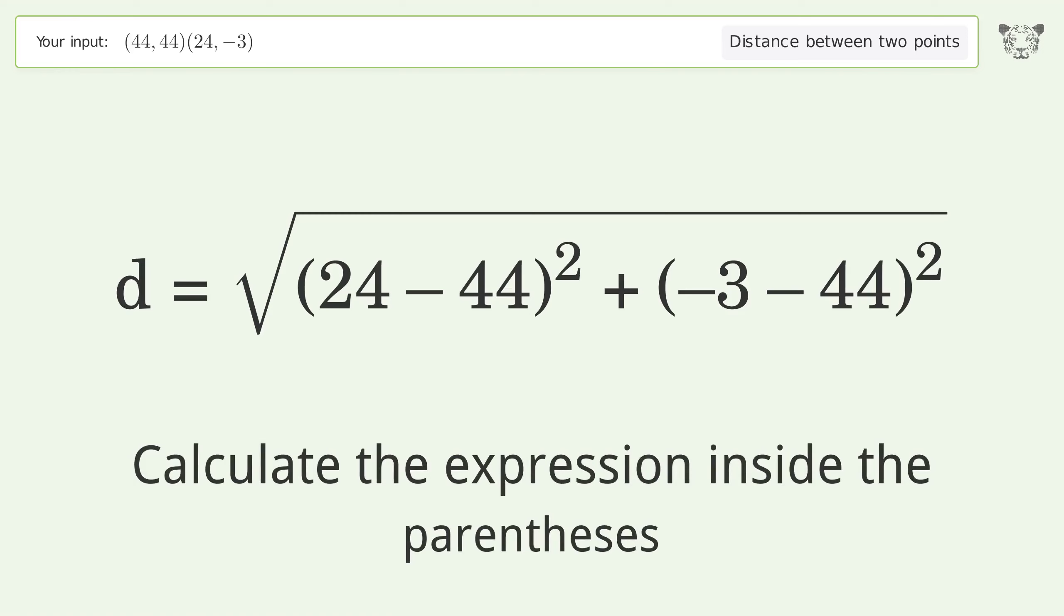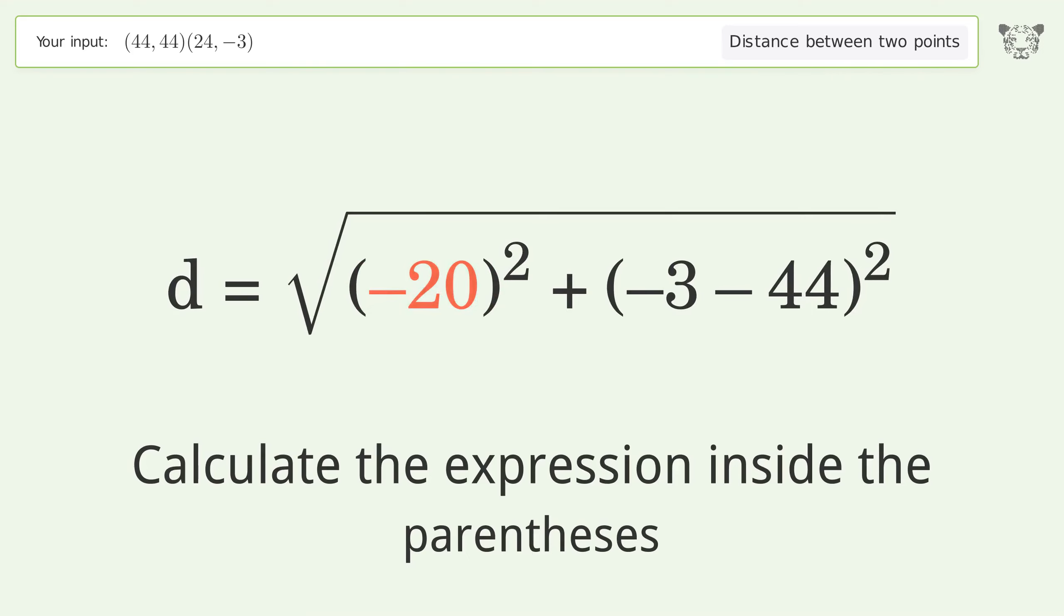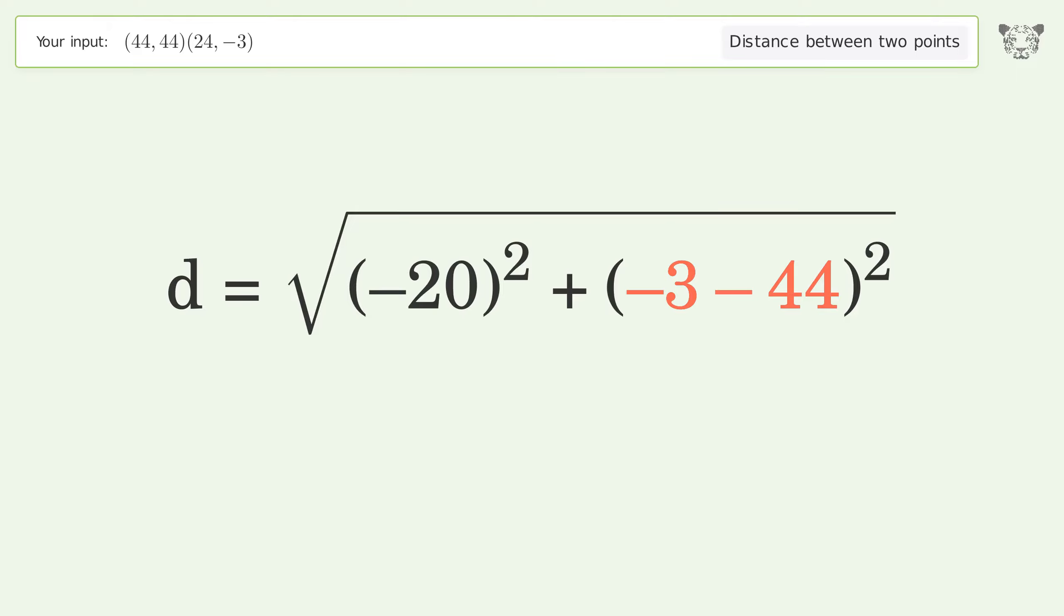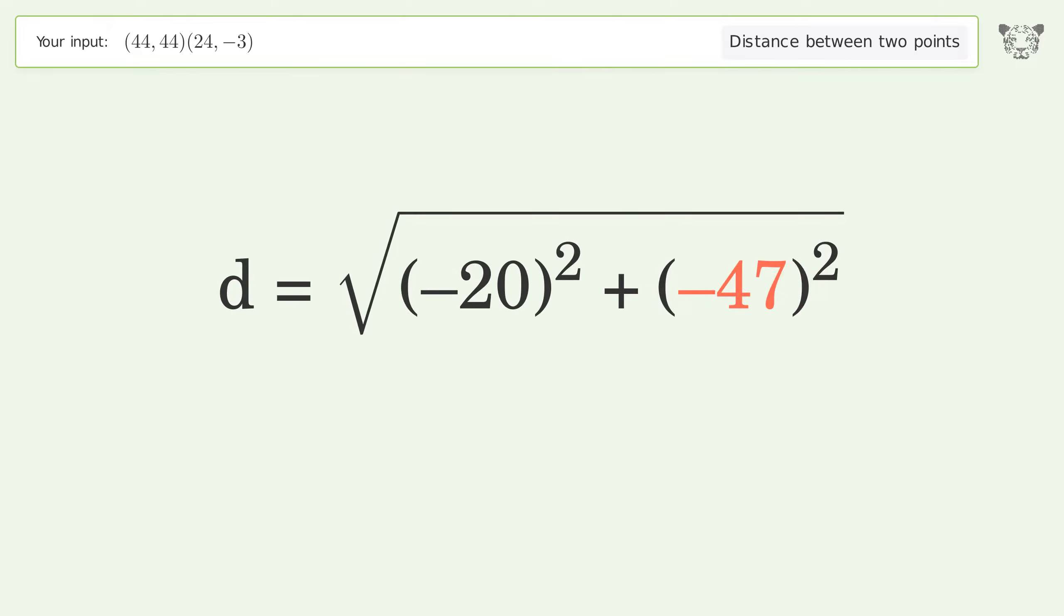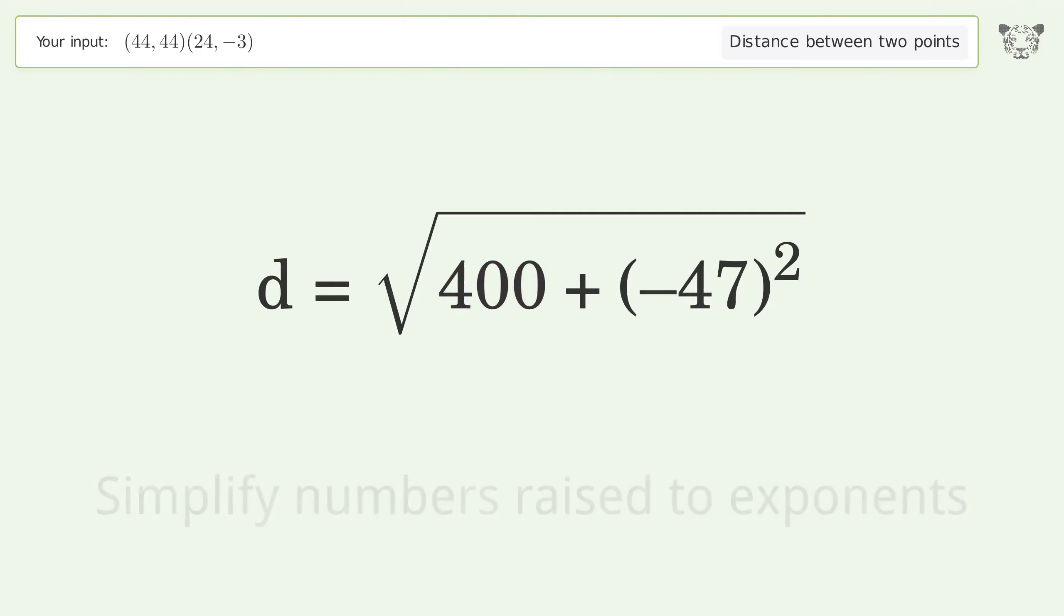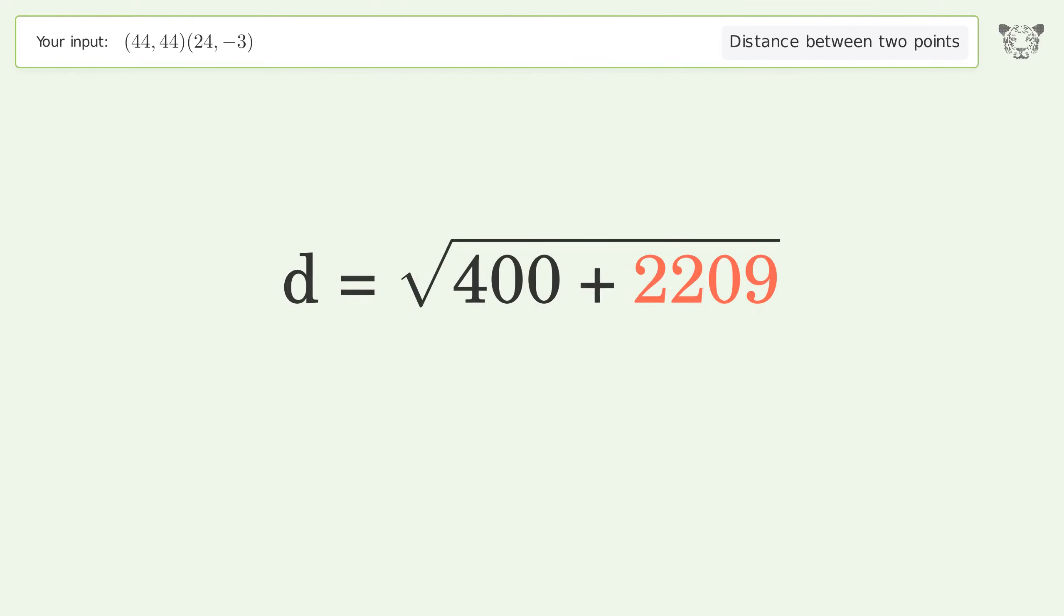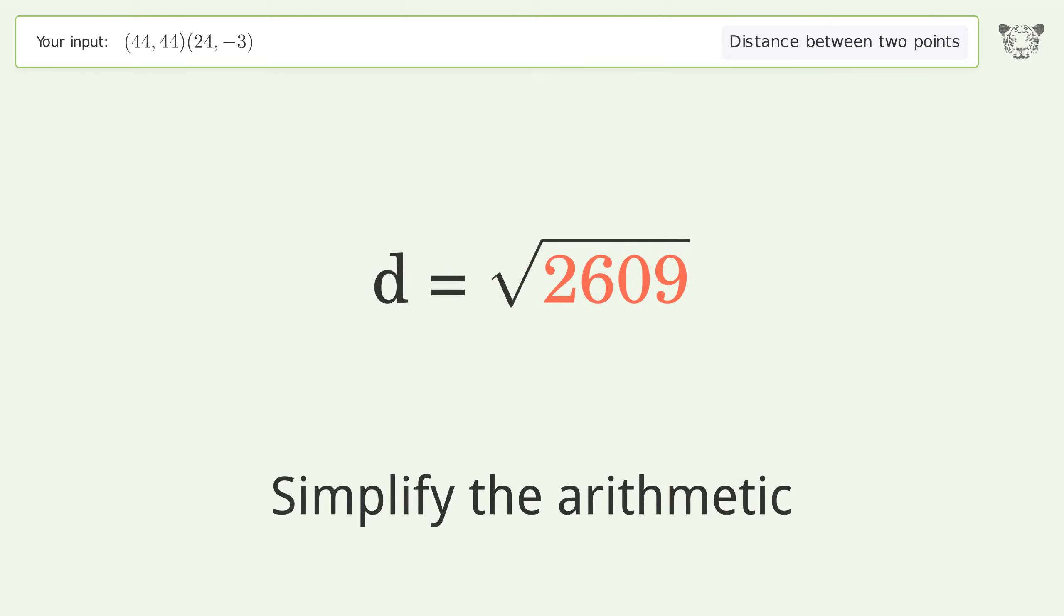Calculate the expression inside the parentheses. Simplify numbers raised to exponents. Simplify the arithmetic. And so the distance between the two points is the square root of 2609 or 51.078.